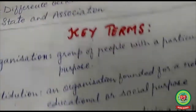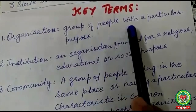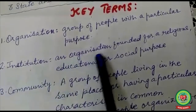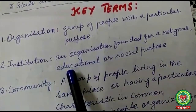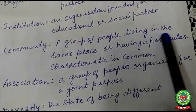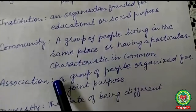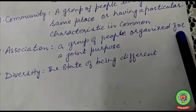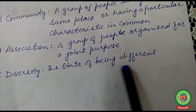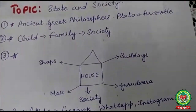Before the discussion of these topics, I would like to talk about the key terms. Organization means a group of people with a particular purpose. Institution is an organization founded for a religious, educational, or social purpose. Community is a group of people living in the same place or having a particular characteristic in common. Association is a group of people organized for a joint purpose. Diversity is the state of being different.